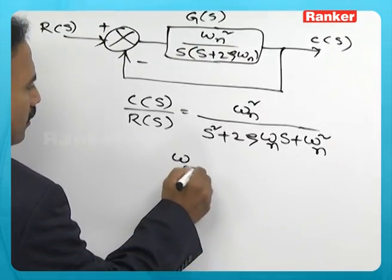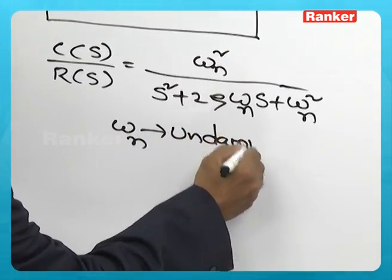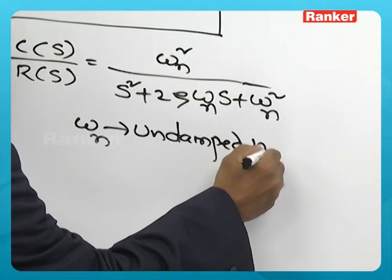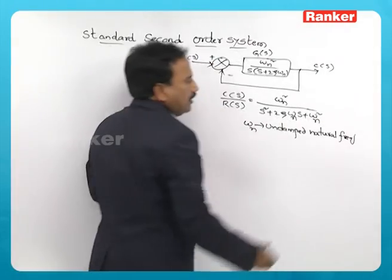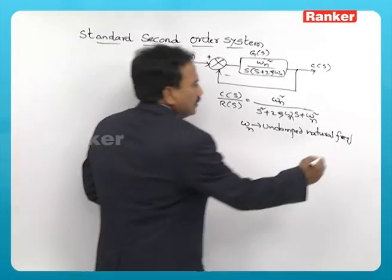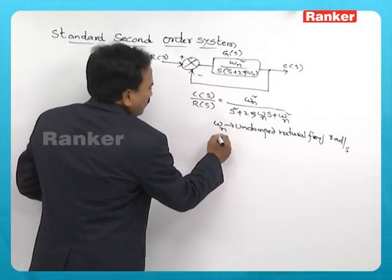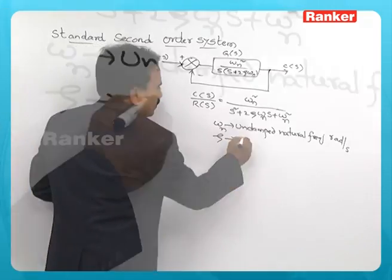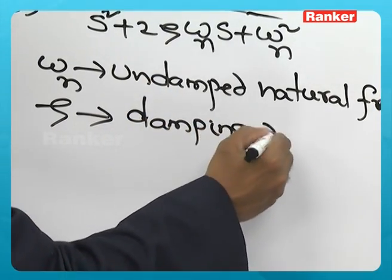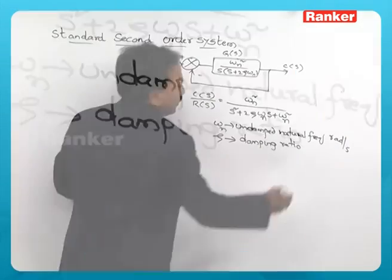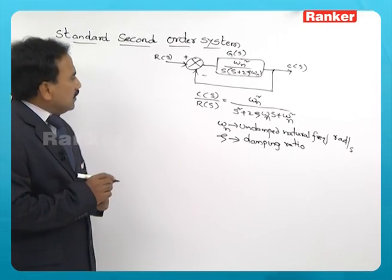One is omega n, known as undamped natural frequency in radians per second. The second is zeta, known as damping ratio or damping constant. These are the two important parameters of second order system.